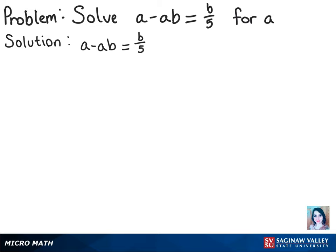To solve this problem for a, the first thing we can do is factor the left side of the equation so that we only have a in one place. And that will get us a times the quantity 1 minus b equals b over 5.